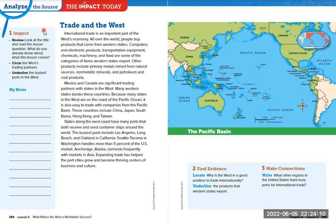International trade is an important part of the west's economy. All over the world, people buy products that come from western states. Computers and electronic products, transportation equipment, chemicals, machinery, and food are some of the categories of items western states export. Other products include primary metals mined from natural sources, non-metallic minerals, and petroleum and coal products.